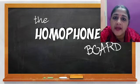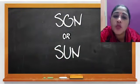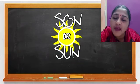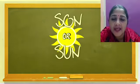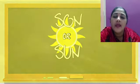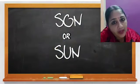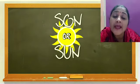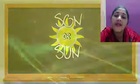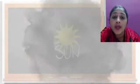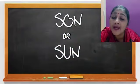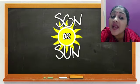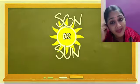For example, 'son.' One is S-O-N and the second is S-U-N. In the first sentence, if we say S-O-N, we will say 'his son is coming today.' Here we are talking about a person whose son is arriving today. In the second sentence, if we say 'today the sun is shining brightly in the sky,' here we mean the sun which is in our solar system.